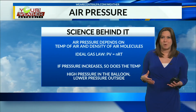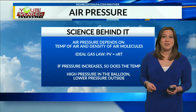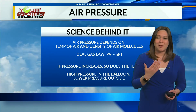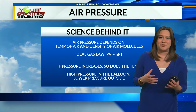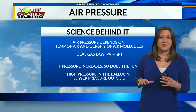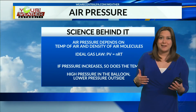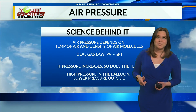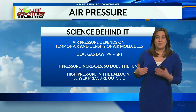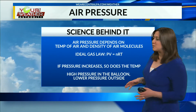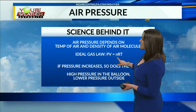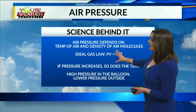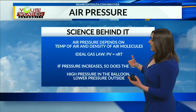Air pressure depends on the temperature of the air. Because the Earth is tilted and orbiting around the sun, we end up with different heating depending on the surface and where you're located on the earth. The temperature of the air and the density of the air molecules is how we figure out what the air pressure is. The ideal gas law is what we use, which is PV equals NRT. We plug the information in to find out what the air pressure is.